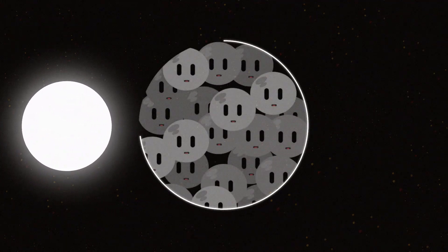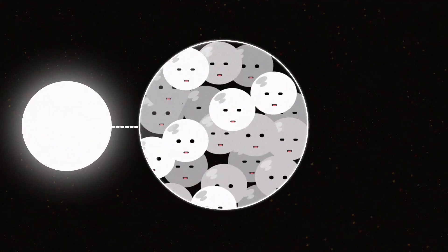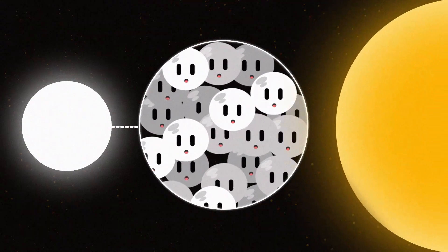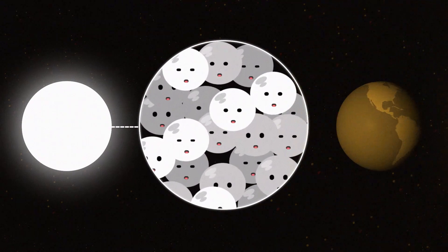A white dwarf is the remaining compact core of a low-mass star. It's so condensed that its mass is comparable to the sun, even though its size is similar to the Earth.